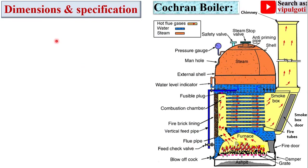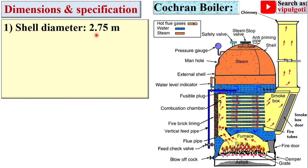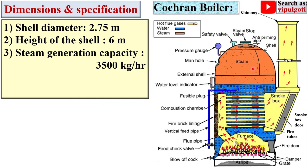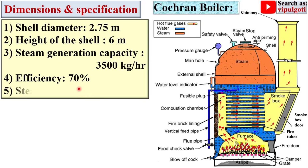Next, dimensions and specifications — these are typical values that may vary slightly in actual practice. Shell diameter is 2.75 meters. Height of the shell is 6 meters. Steam generation capacity is 3500 kg per hour, meaning if you run the Cochran boiler for one hour you can generate 3500 kg of steam. Efficiency of the boiler is approximately 70 percent. Steam pressure is 6.7 bar.